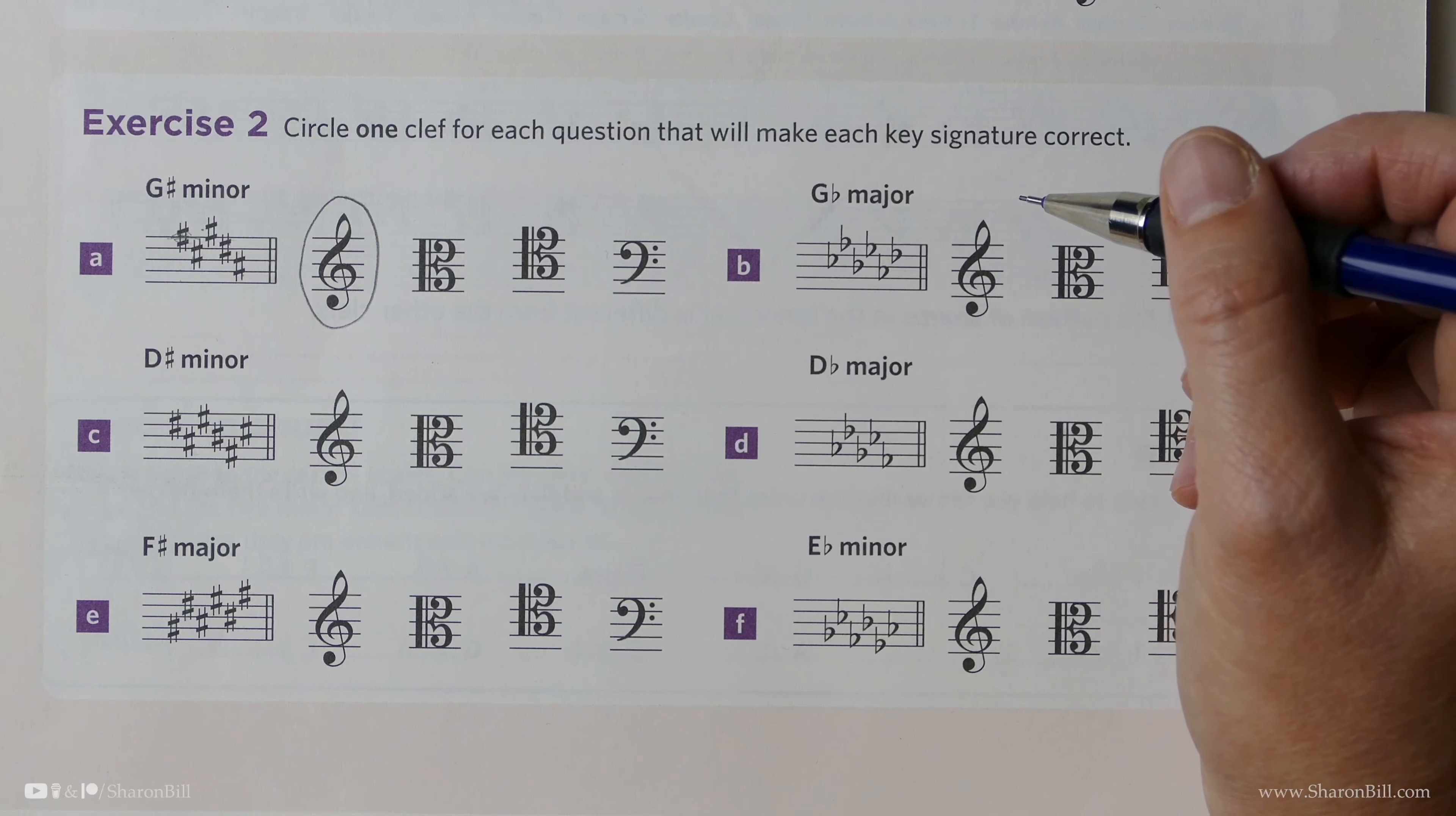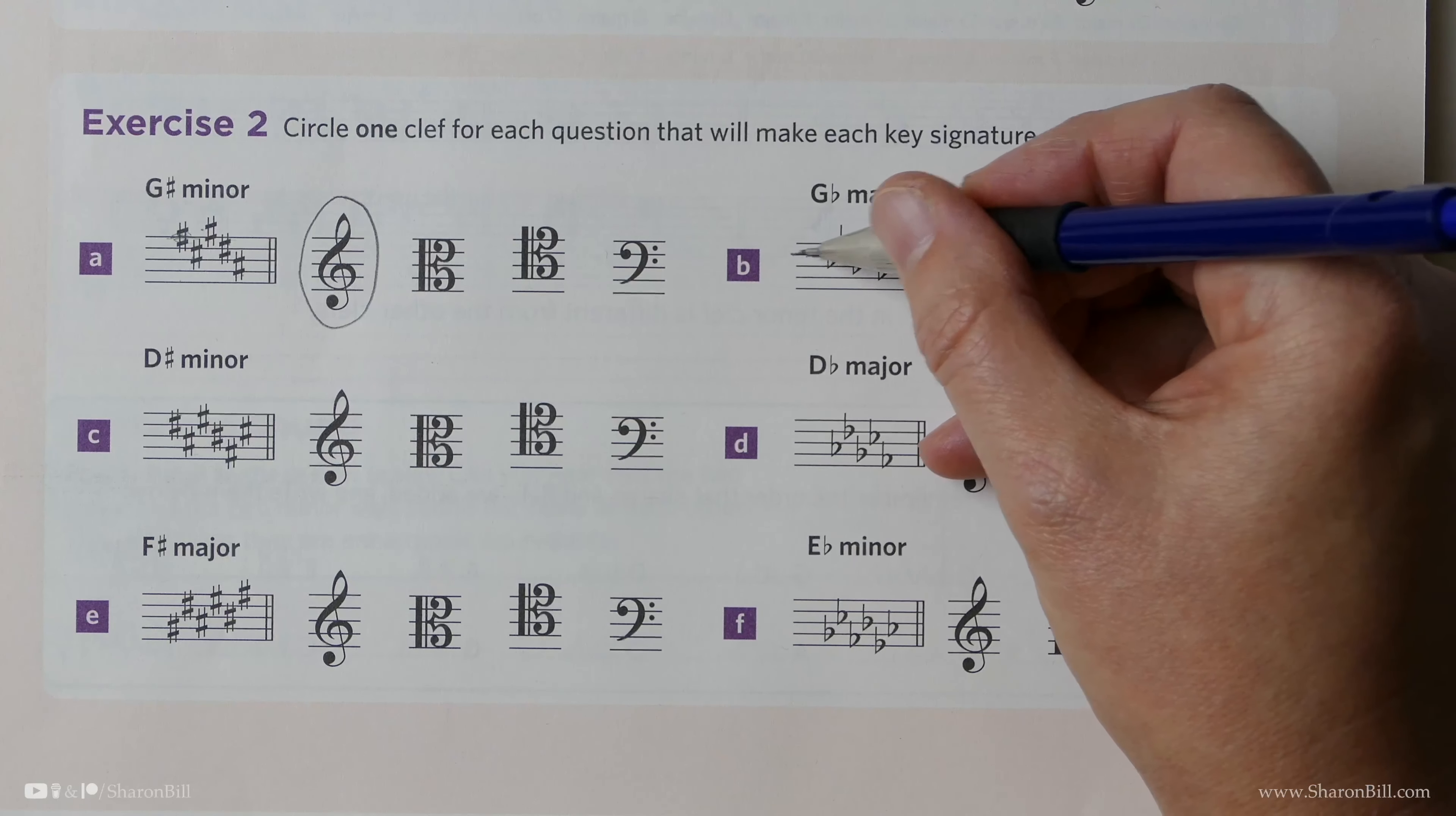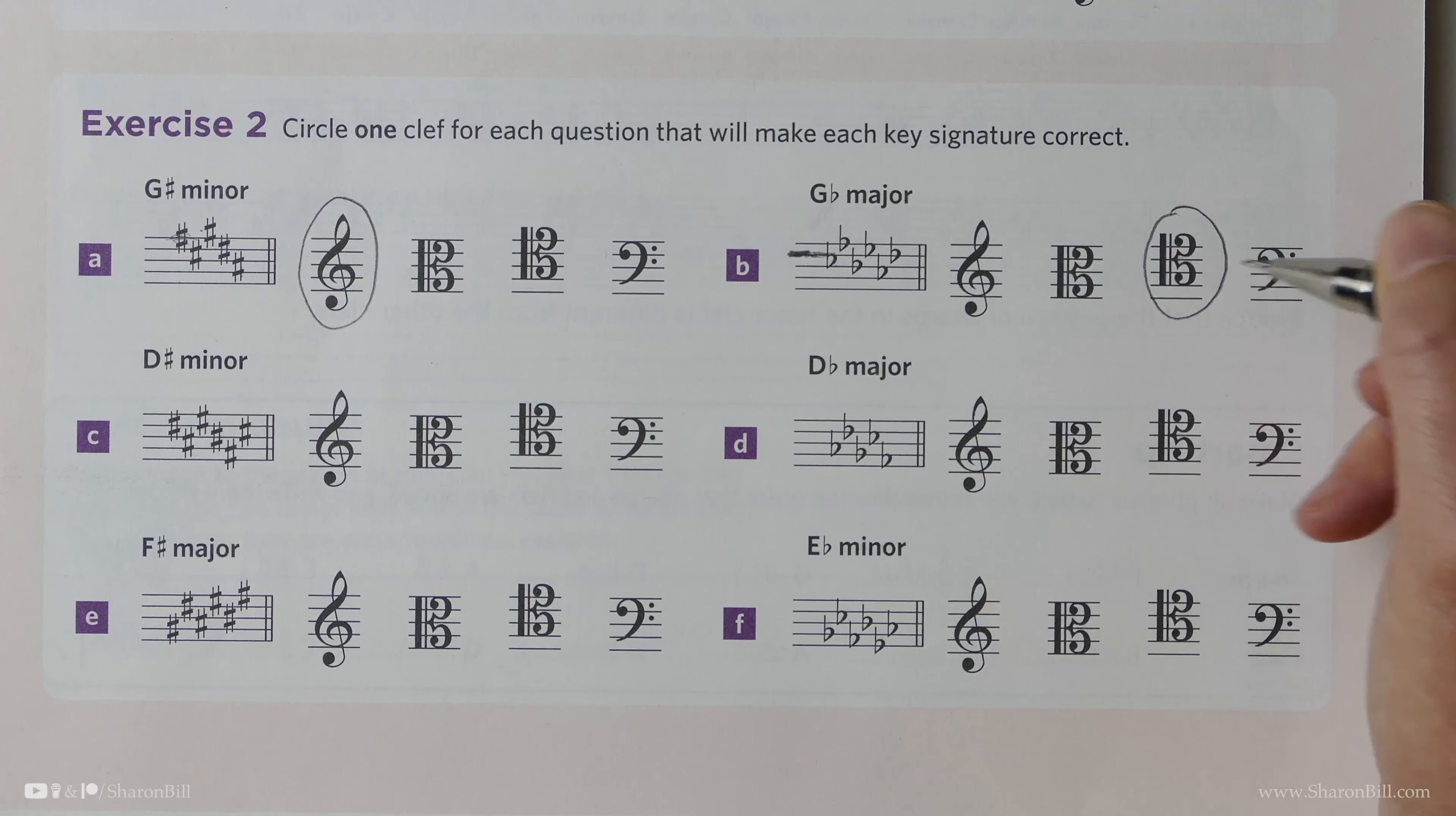So G flat major should have a key signature of B, E, A, D, G and C flat, but we only need the B flat to get it started so if that is C that would be B so that gives us our clef we need that to be C and then that will be B flat and so it's got to be the tenor clef hasn't it.